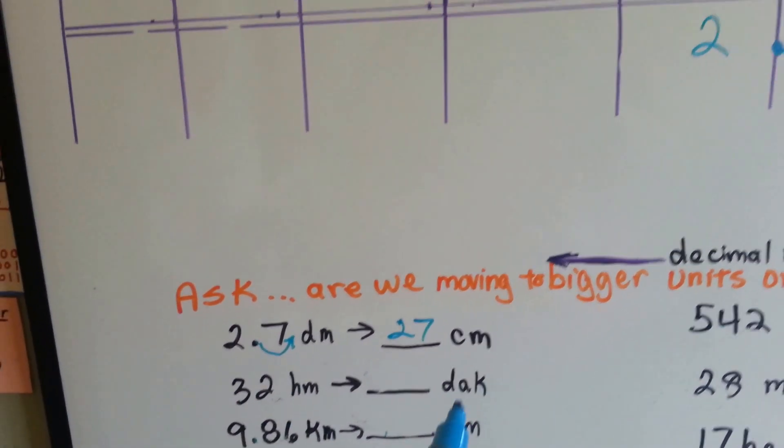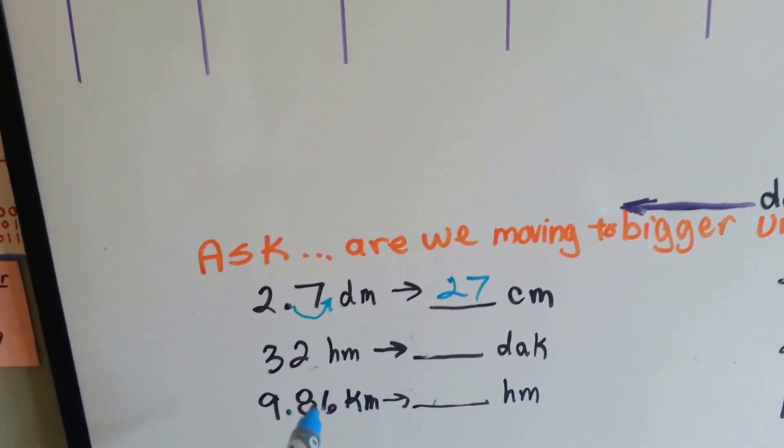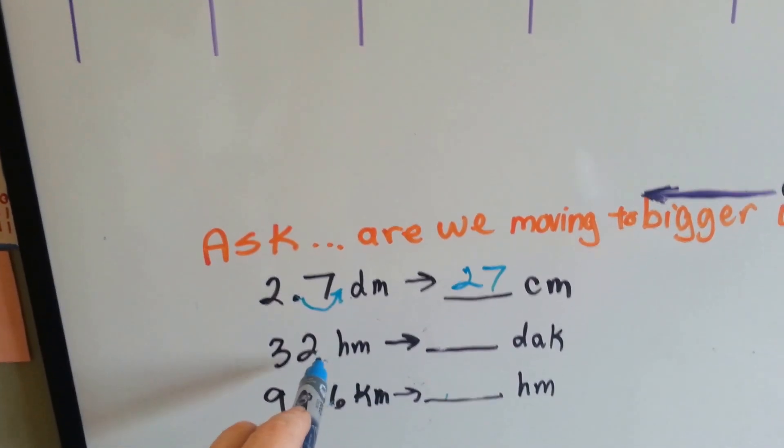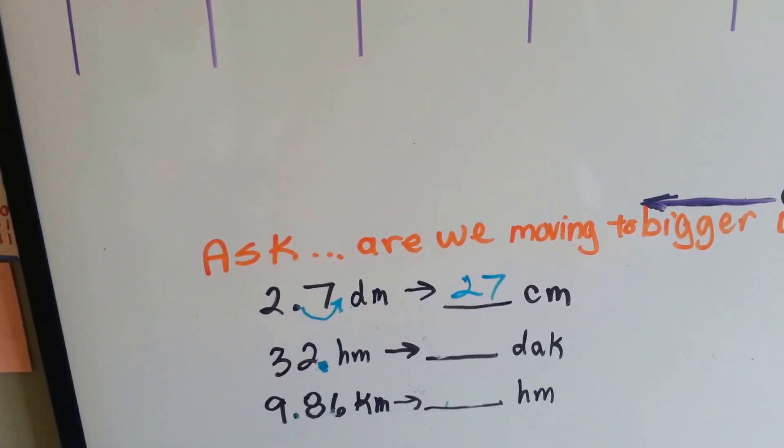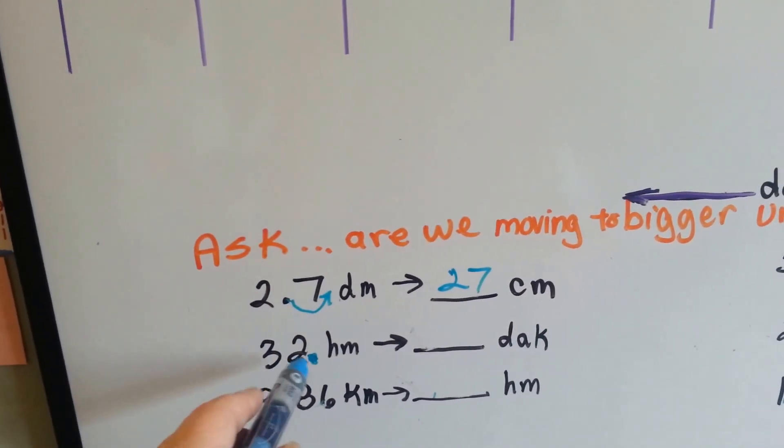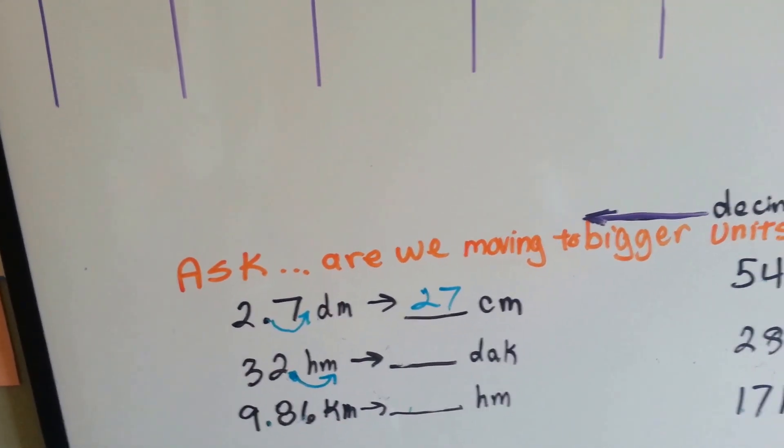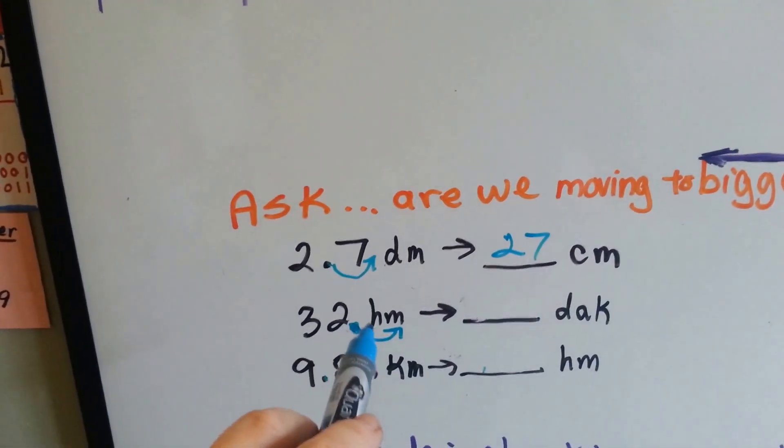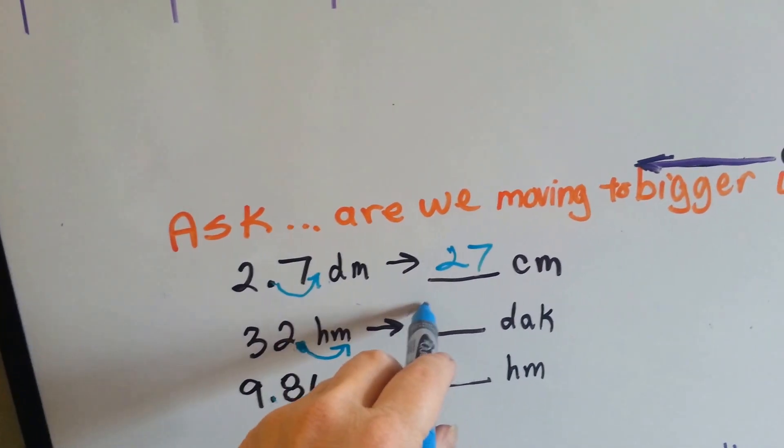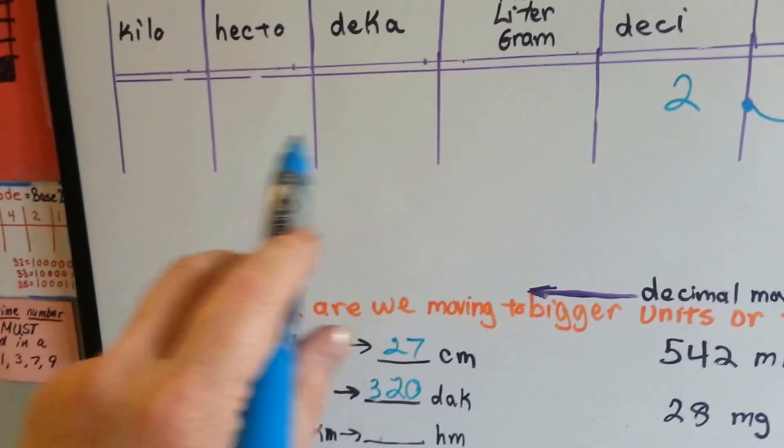32 hectometers converted to decimeters. Well, hectometers are bigger than decimeters. We're moving smaller, so the decimal point is going to move one place smaller. But there is no decimal point. What do we do? My favorite rule. There's an invisible decimal point right here. There's an invisible decimal point behind every number. If we had to move it one space this way, what could we put there to hold the space? In math, zeros have no value. They're just placeholders. So what we can do is, we can put a placeholder zero there. So, 32 hectometers becomes 320 decimeters.